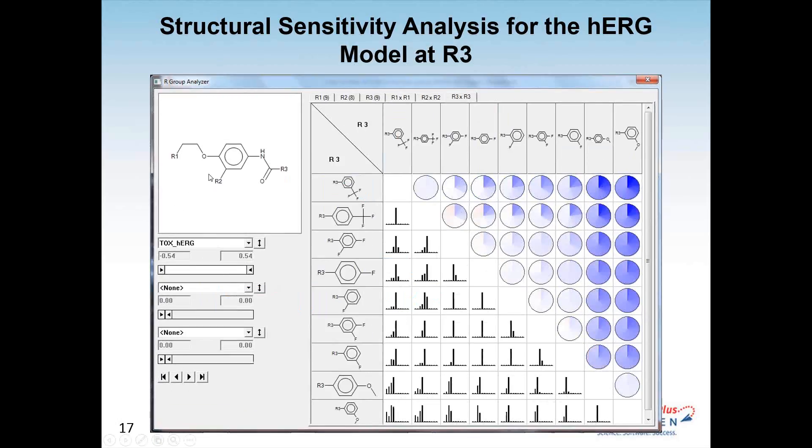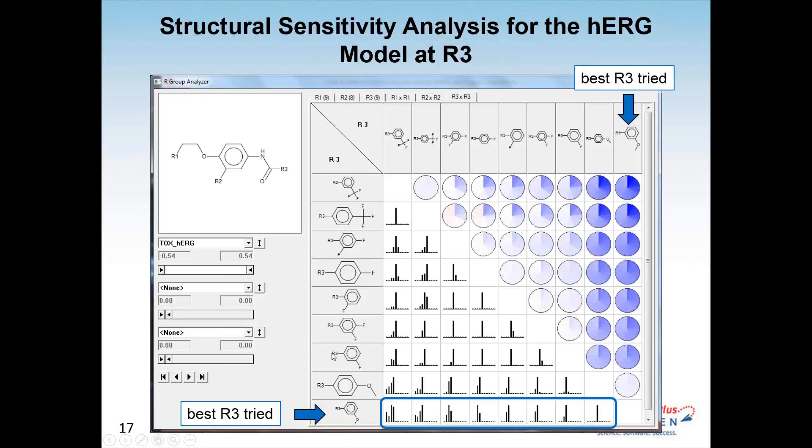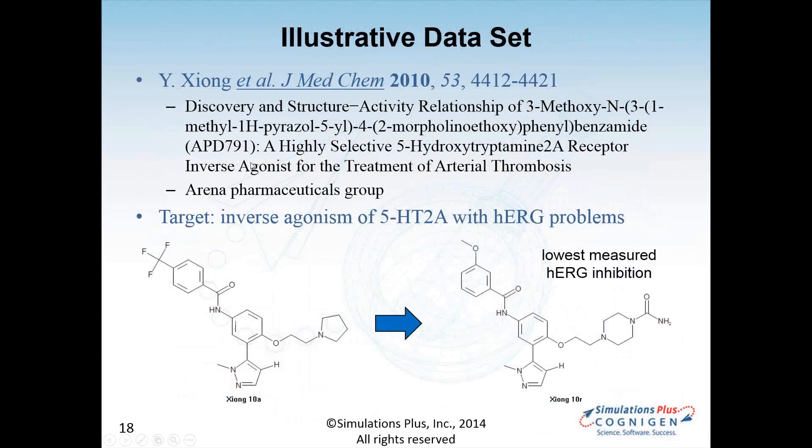This is looking at position R3. The best R3 of the ones that was tried is this metamethoxy group. The strong blue values indicate that it's going in the direction you want, that is to lowering the IC50.